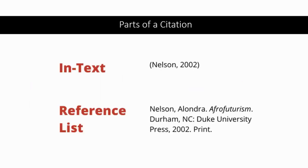There are two parts to a citation. The first is the in-text citation — the parenthetical reference or footnote you include in the text of your paper. The second part is the bibliography, works cited page, or reference list. This includes the complete information about your source.